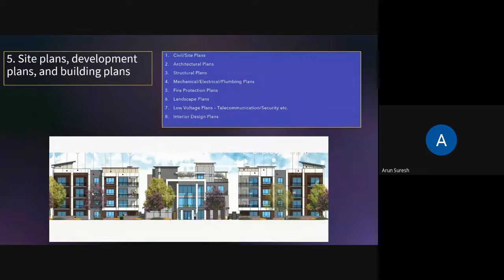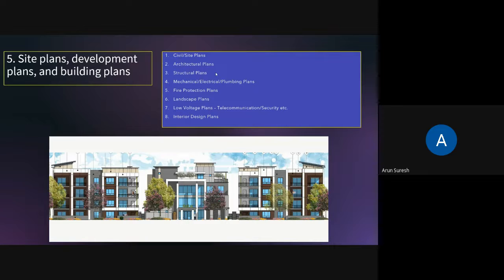Once the concept design is done, step four is to acquire the property and put an offer on the land. Once the land is yours, the next step is to produce site plans, development plans, and building plans. Various different plans are needed to build a project — site plans, civil plans showing all infrastructure and utilities, architectural plans showing how the units are laid out, where kitchens and bathrooms are, and how corridors are spaced. Structural plans give all the framing details including foundations.